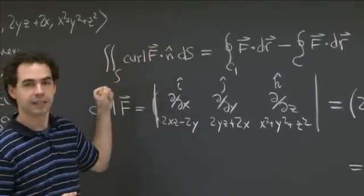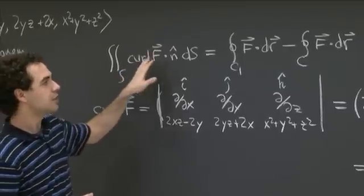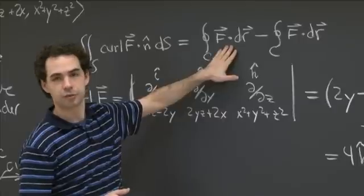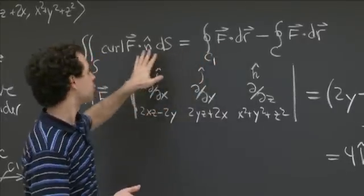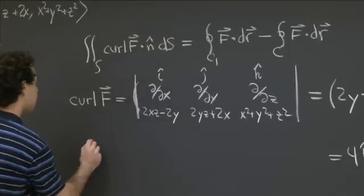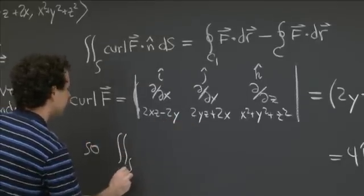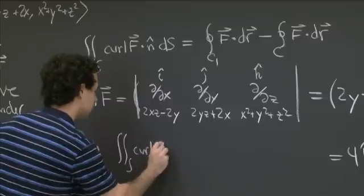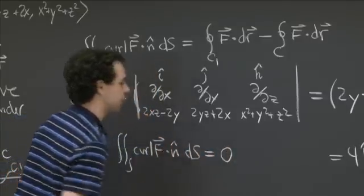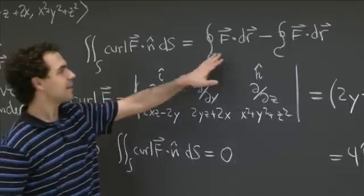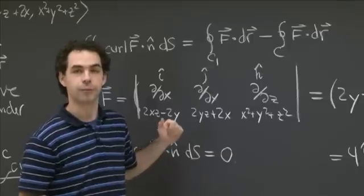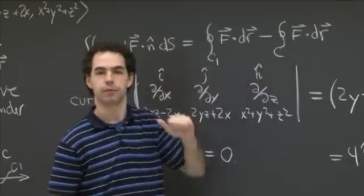That's really nice — it simplifies our life very much. The surface integral of curl F dot n dS equals 0. So our line integral over C is now expressed purely in terms of the line integral over c1. We just need to compute that one other line integral.